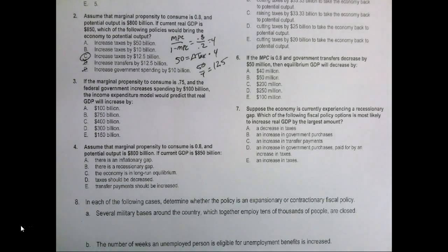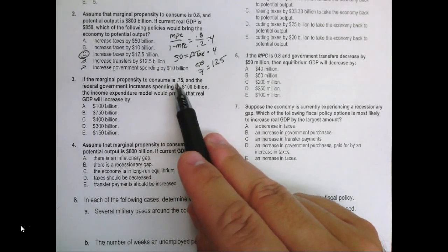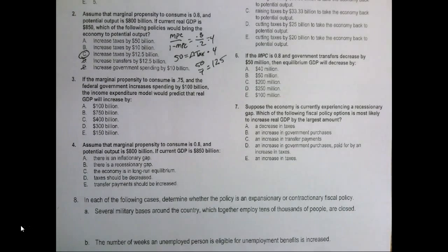This question is asking what will happen to overall output if we increase government spending by $100 billion given an MPC of 0.75. So we need the spending multiplier in this case.